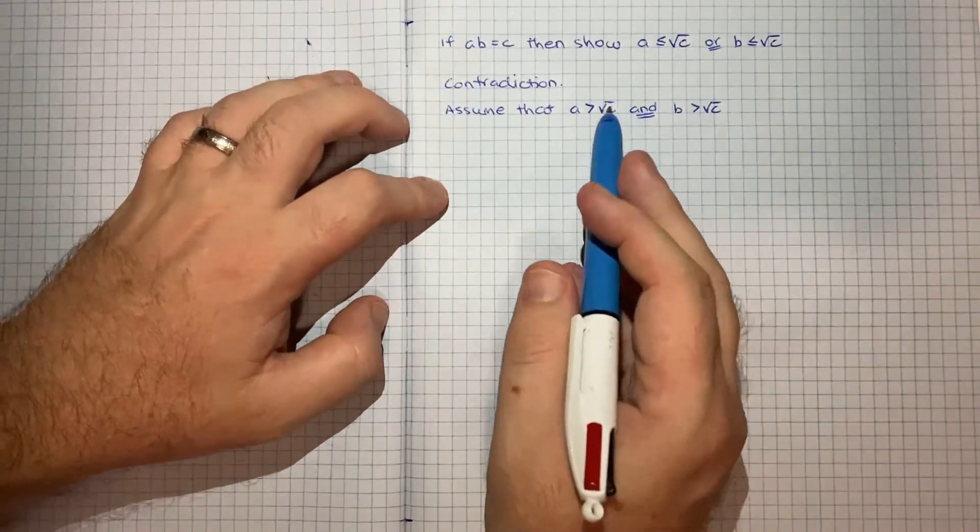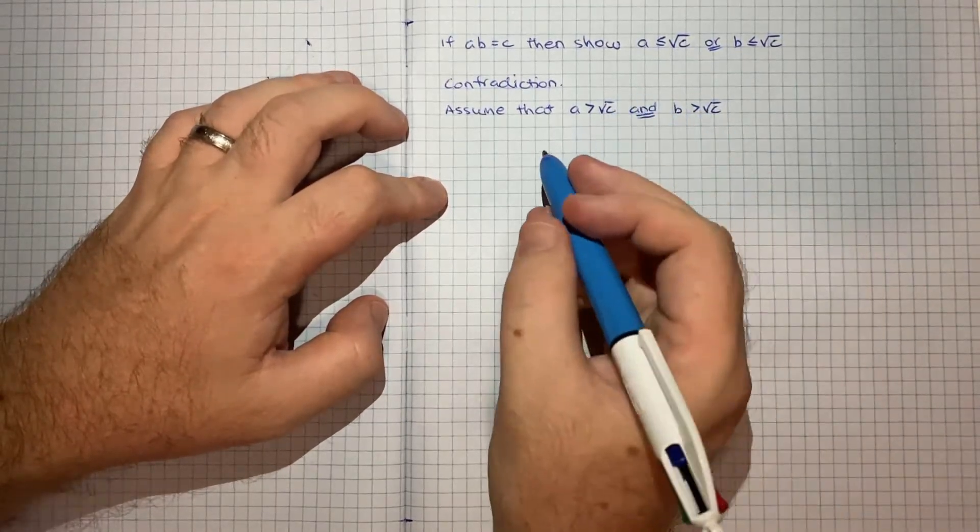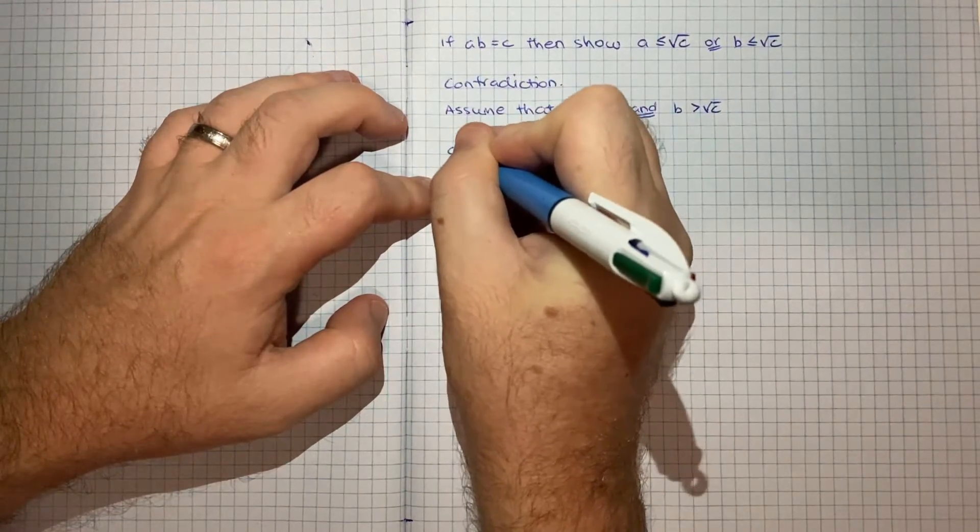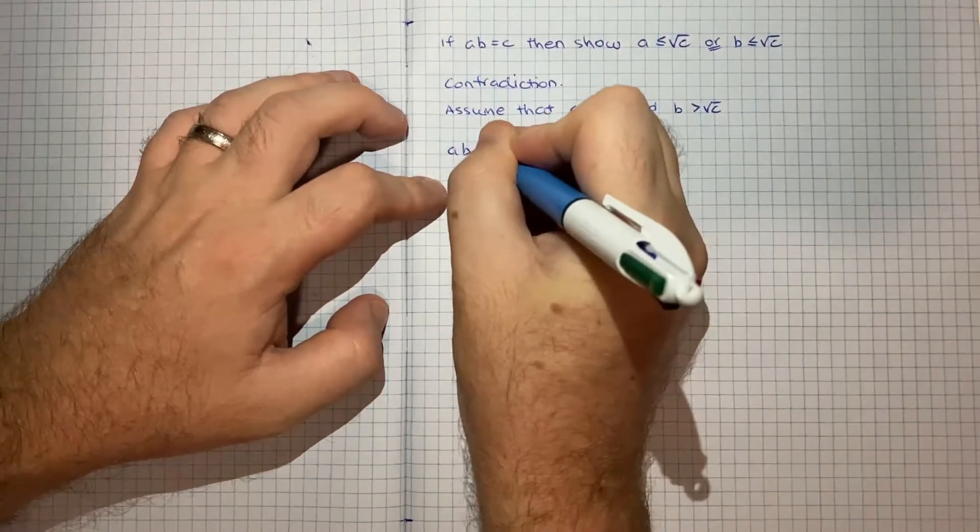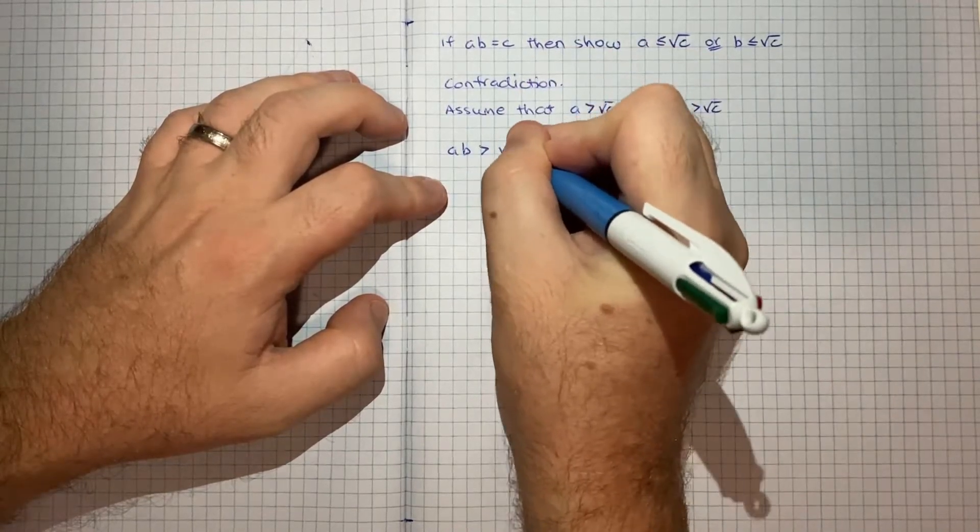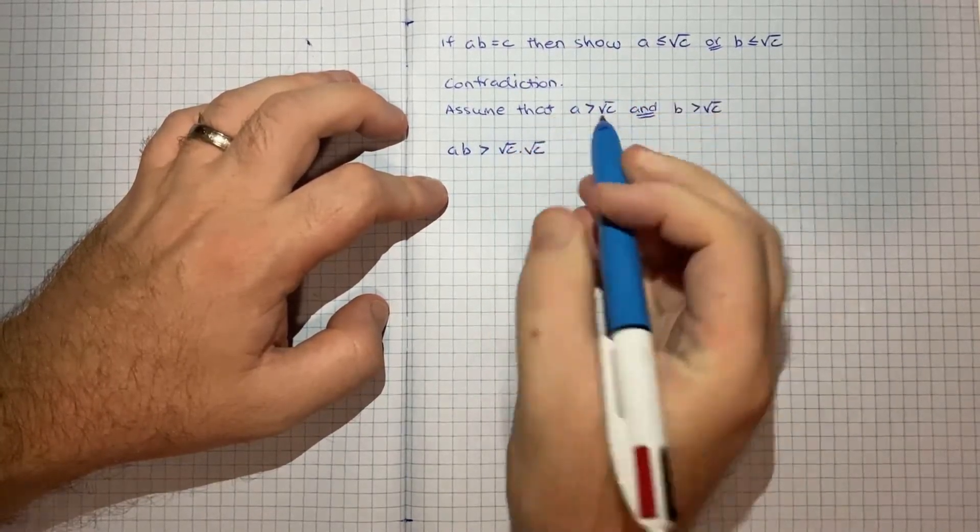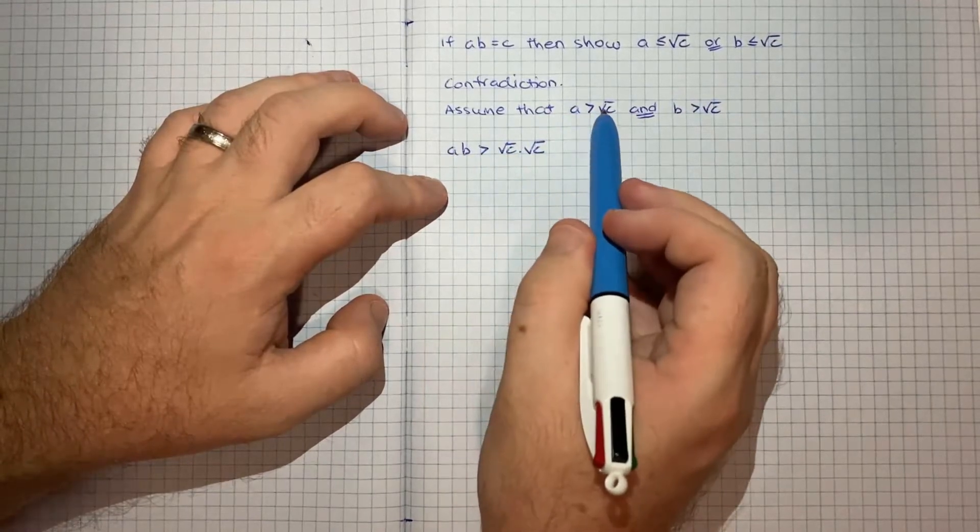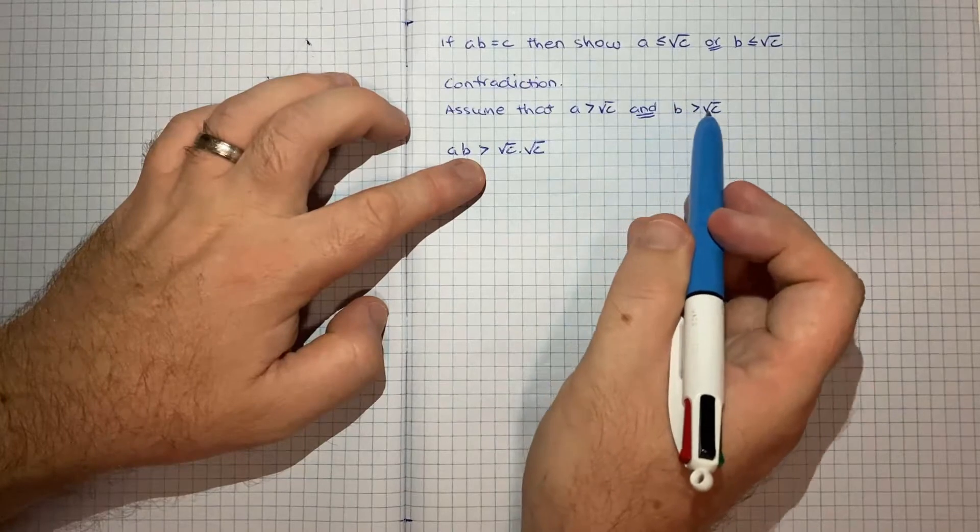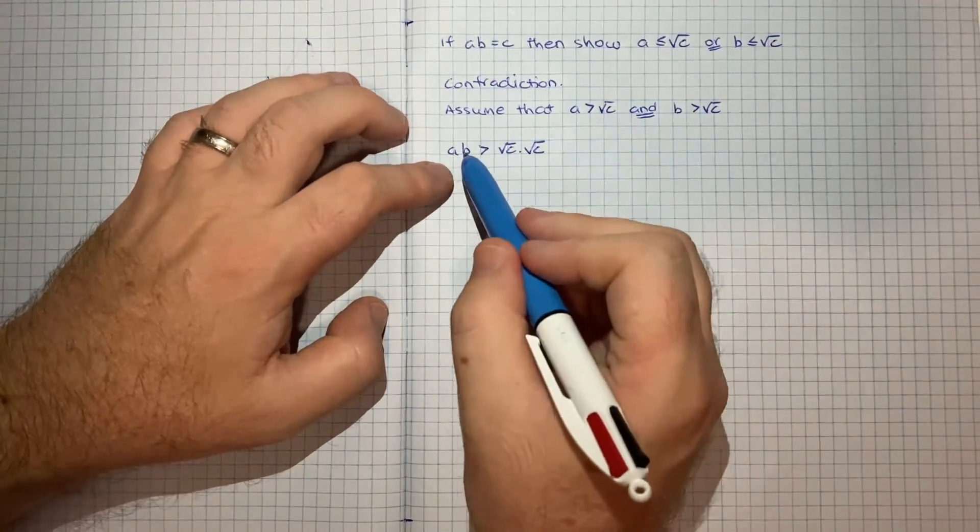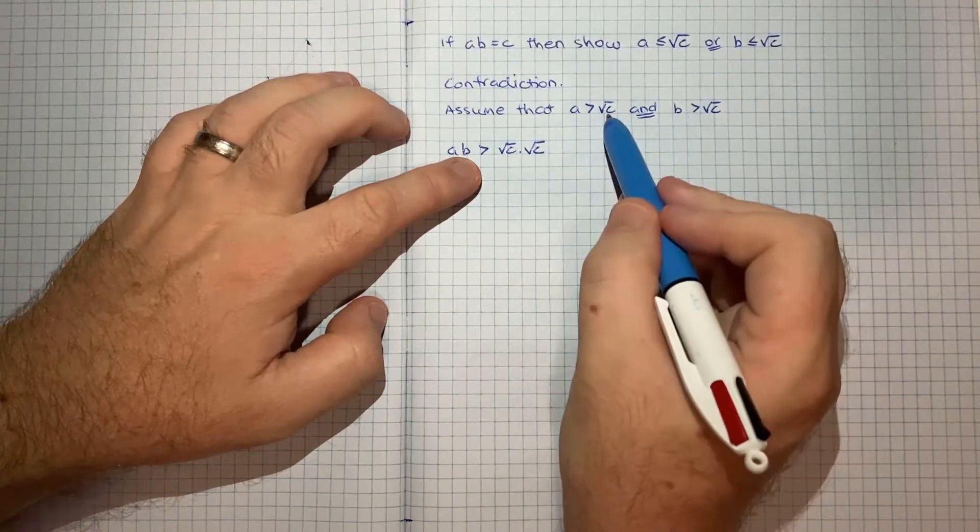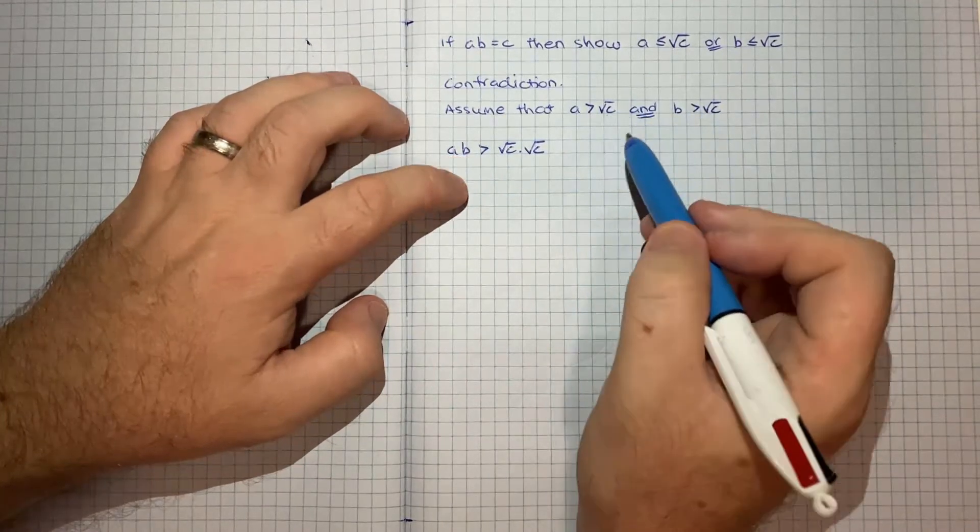So if we make that assumption, then what we could say is that a times b would be greater than root c times root c. And the reason we can say that is if a is greater than root c and if b is greater than root c, if both of those things are true, then when you bring them both together, the result must be greater than the multiplication of the two things they're each individually greater than.